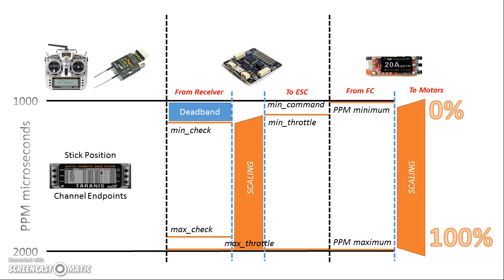Let's take another stab at this. I released a video yesterday talking about all the different throttle settings in CleanFlight and how they interact. It had at least one major error, so I released another video to correct it, but that video wasn't completely correct either, at which point I just took them both down. I know how bad information can live forever on the internet, and I'd rather say nothing than say 70% correct, 30% wrong.